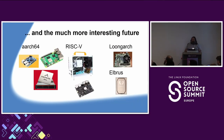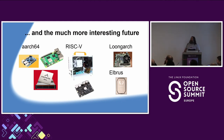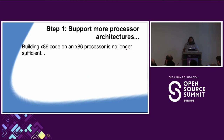But things are getting much more interesting now. We have AArch64, which is in anything from Raspberry Pi to high-end servers. We have RISC-V, which is an open CPU architecture that is starting to get everywhere. Good Linux distributions should make an effort to be on everything, so the first step must be to support processor architectures that are not x86.